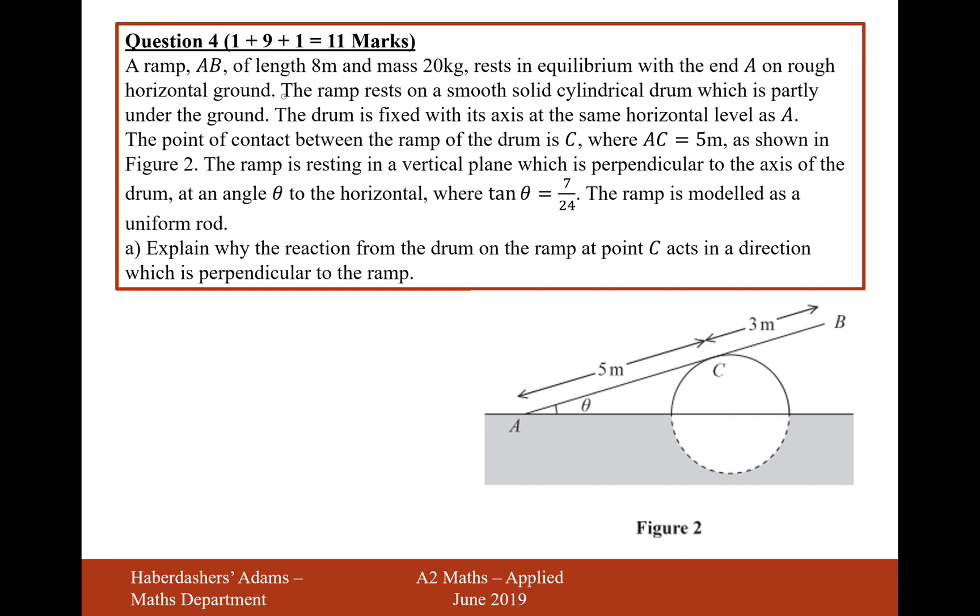A ramp AB of length 8 meters and mass 20 kilograms rests in equilibrium with one end A on the rough horizontal ground. The ramp rests on a smooth solid cylindrical drum which is partly under the ground. The drum is fixed and its axis is on the same horizontal level as A. The point of contact between the ramp and the drum is C, where AC is 5 meters as shown in figure 2.